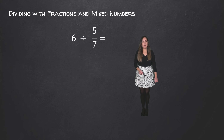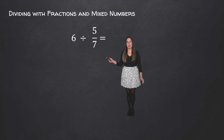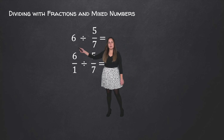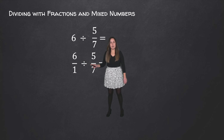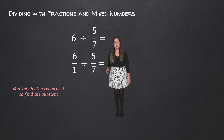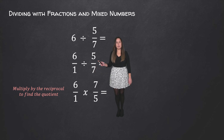Now we're going to do another example where we have 6 divided by 5 over 7. First step is to make sure that both of these are in fraction form. So 6 needs to be rewritten as 6 over 1, and then 5 over 7 is fine. In order to get our quotient, we have to take the 6 over 1 and multiply it by the reciprocal of 5 over 7, which is 7 over 5.